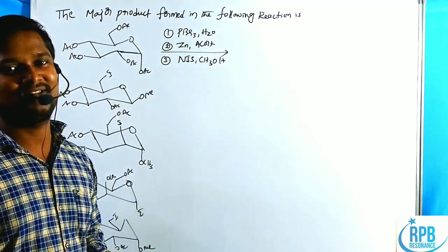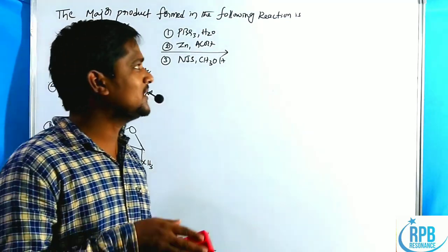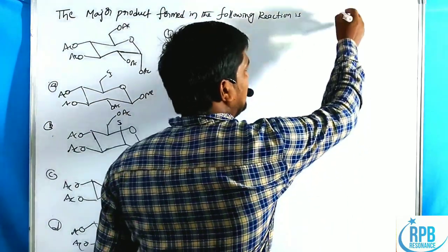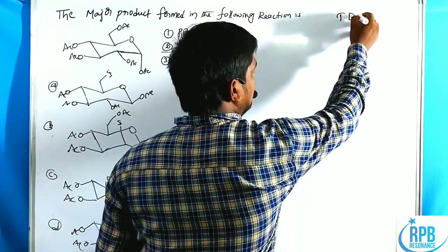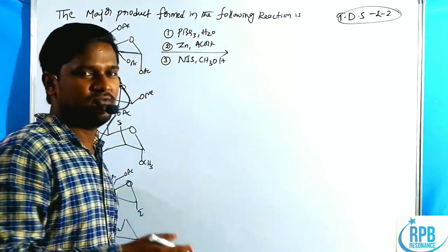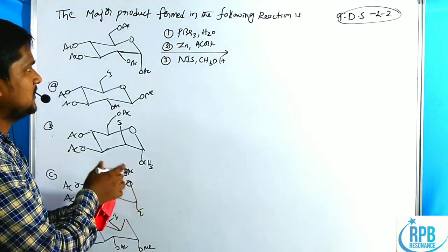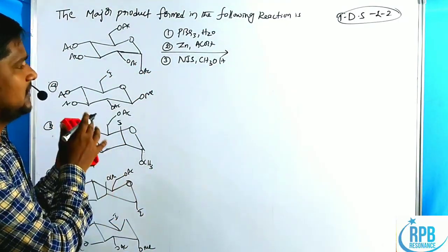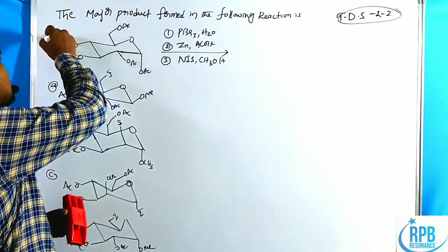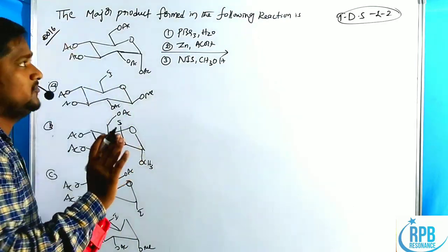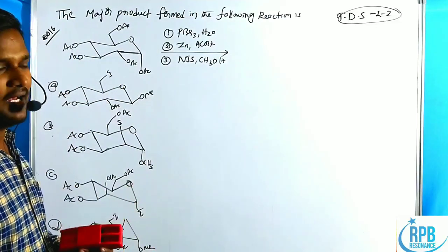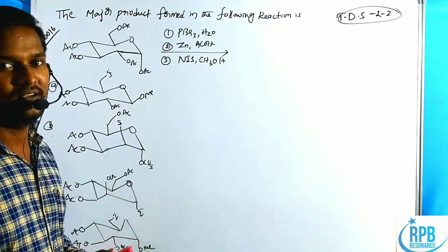Hi everyone, welcome to RPB Resonance Chemistry. We have discussed about telegram doubt session lecture number 2, DDS lecture number 2. In this lecture we have discussed one CSIR problem given in 2016 December for 4 marks — a very easy question regarding biomolecules carbohydrate.